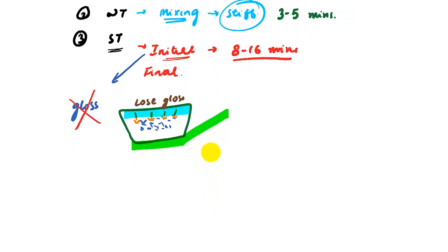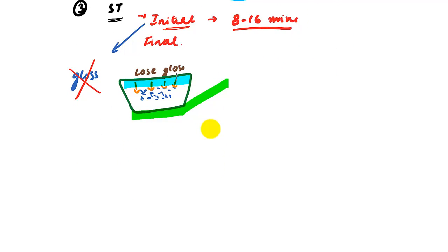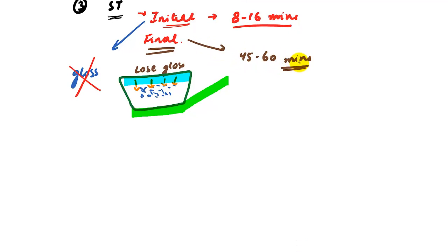The final setting time occurs when the major crystallization process is complete — meaning conversion of hemihydrate to dihydrate is essentially done. The final setting time is 45 to 60 minutes, at which point the gypsum can be removed from its impression without distortion. In the next video, we will cover other properties and the types of gypsum products.